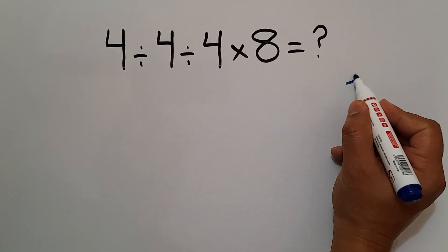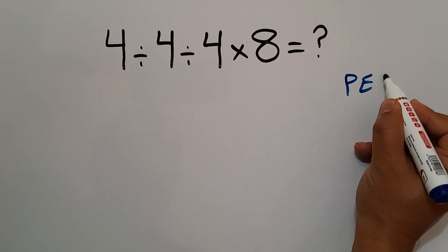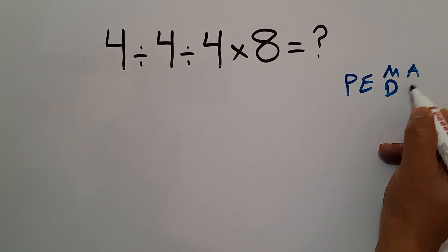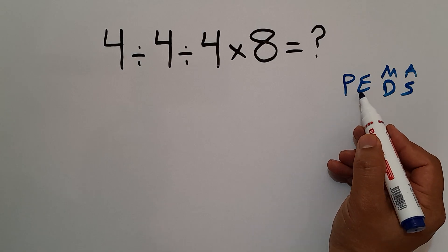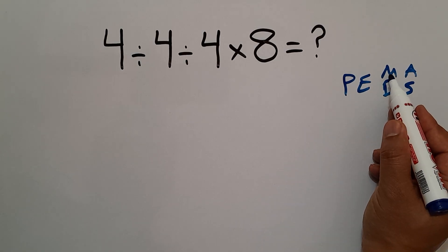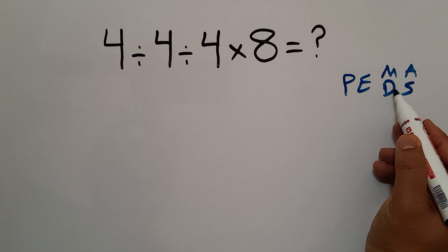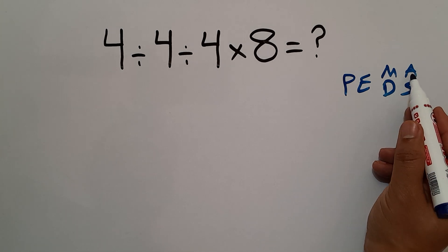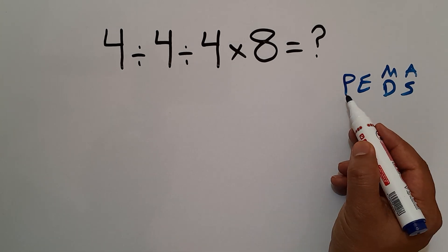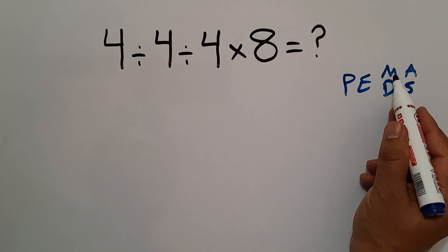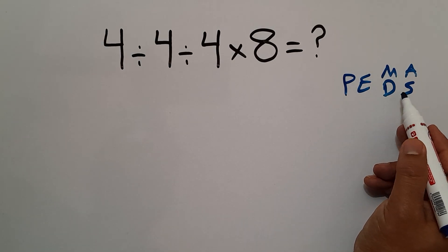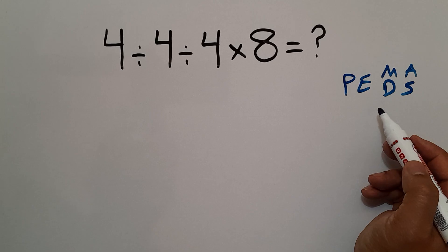which is PEMDAS. P stands for parentheses, E stands for exponents, M and D stands for multiplication and division, and A and S stands for addition and subtraction. We first do parentheses, then exponents, then multiplication or division, and finally addition or subtraction.